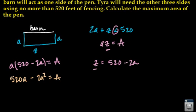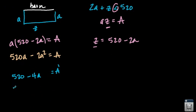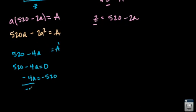I'm going to start by taking the derivative, because any time we are looking to find a maximum or minimum, we take the derivative. So we end up with A prime equals 520 minus 4a. Any time we're finding a maximum or minimum, the tangent at that point is 0. So I'm going to substitute 0 for A prime, and I'm going to solve for a. So I end up with negative 4a equals negative 520. I'm going to divide by 4 on both sides. So a is equal to 130.